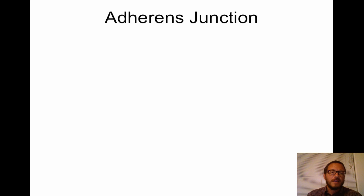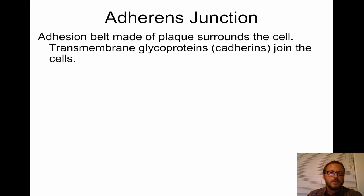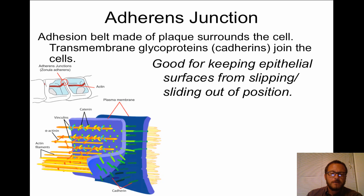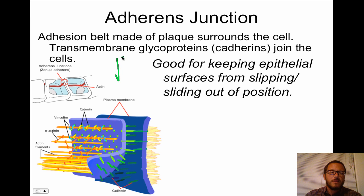The next type of junction is called an adherens junction. An adhesion belt made of plaque surrounds the cell. Transmembrane glycoproteins called cadherins join the cells together. This is good for keeping epithelial surfaces from slipping or sliding out of position — it resists a shear force, keeping one surface from sliding relative to the other.